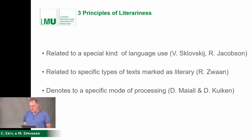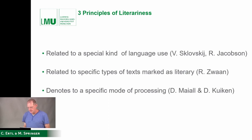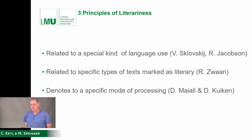These three principles do not stand side by side — they are integrated in the phenomenon of literariness, which could be imagined as a triangle, with one spot each on the reader's text knowledge, the experience and response when reading literary texts, and lastly the author's competence when producing literature on the level of story and discourse. This leads us to construction grammar.